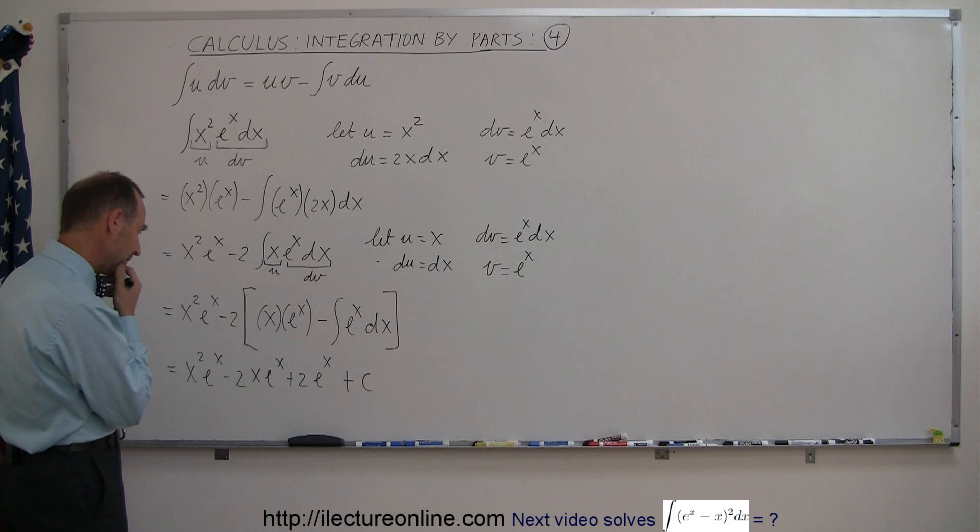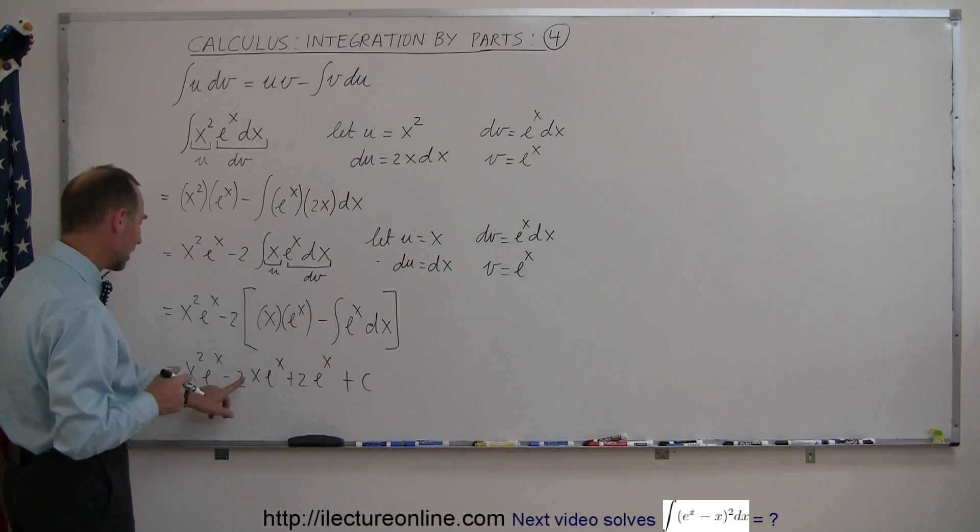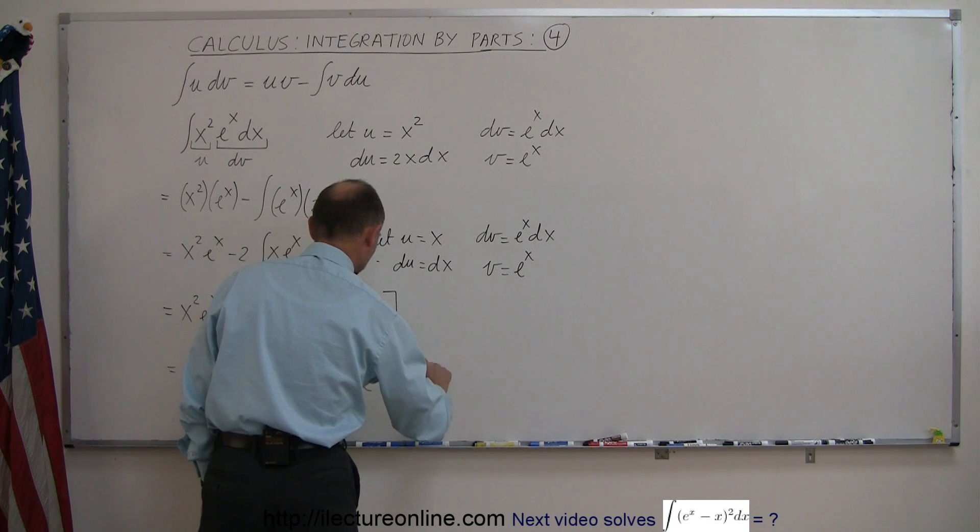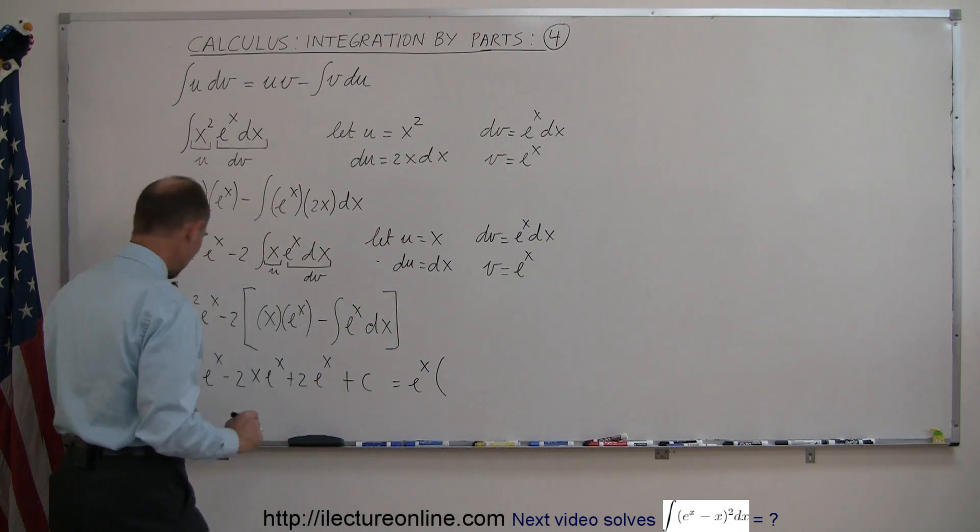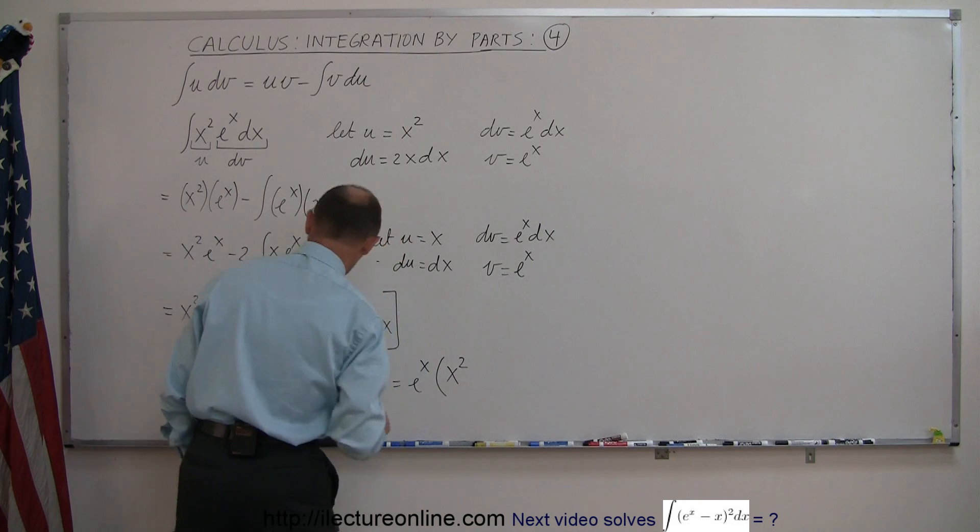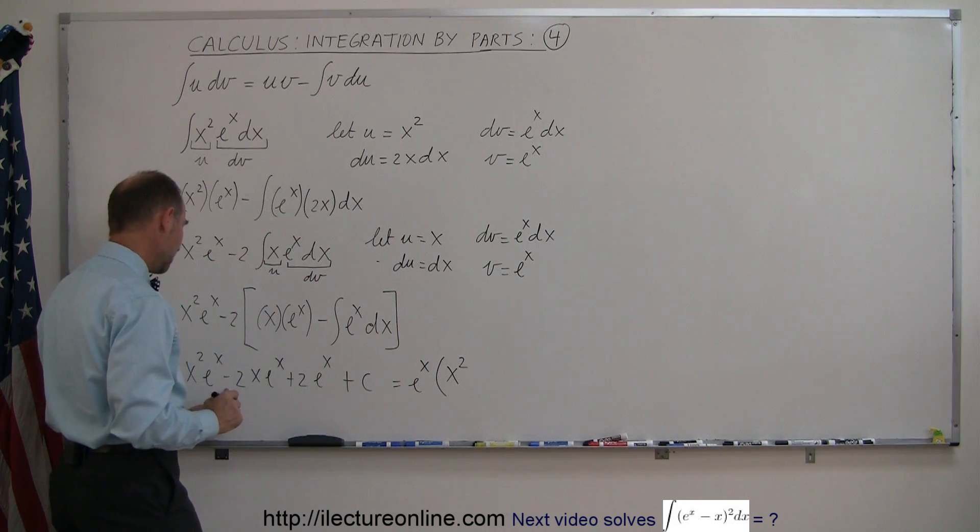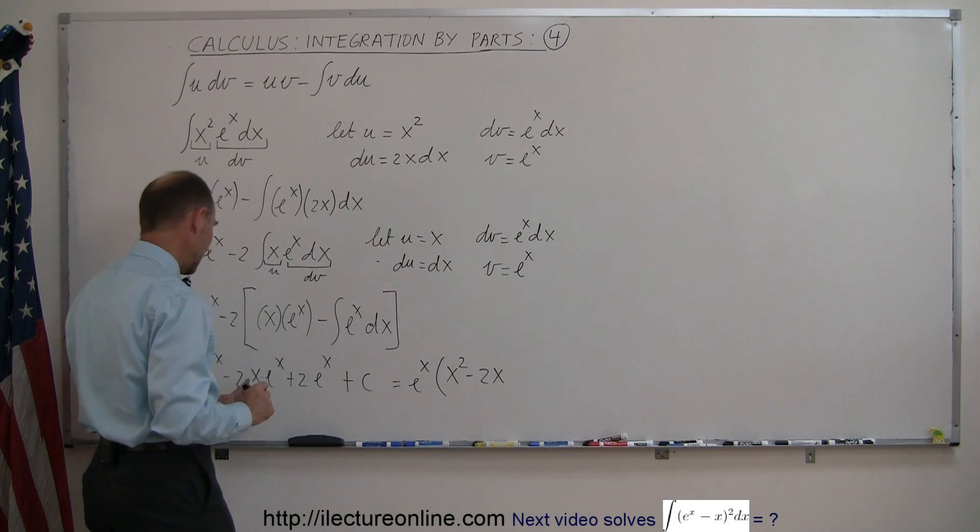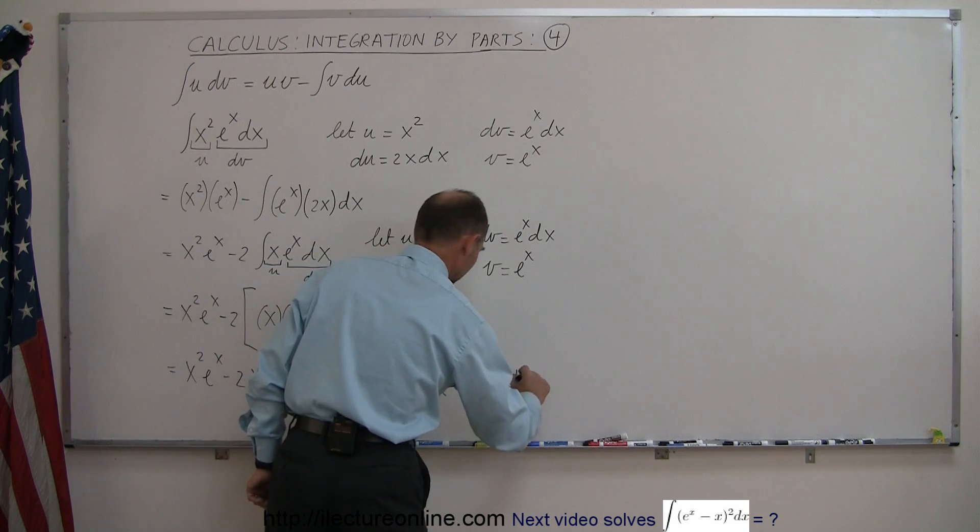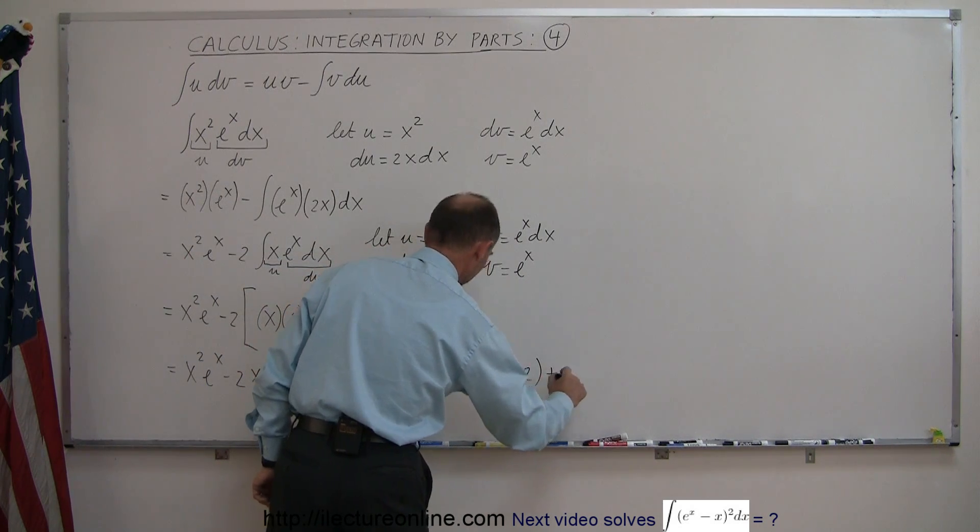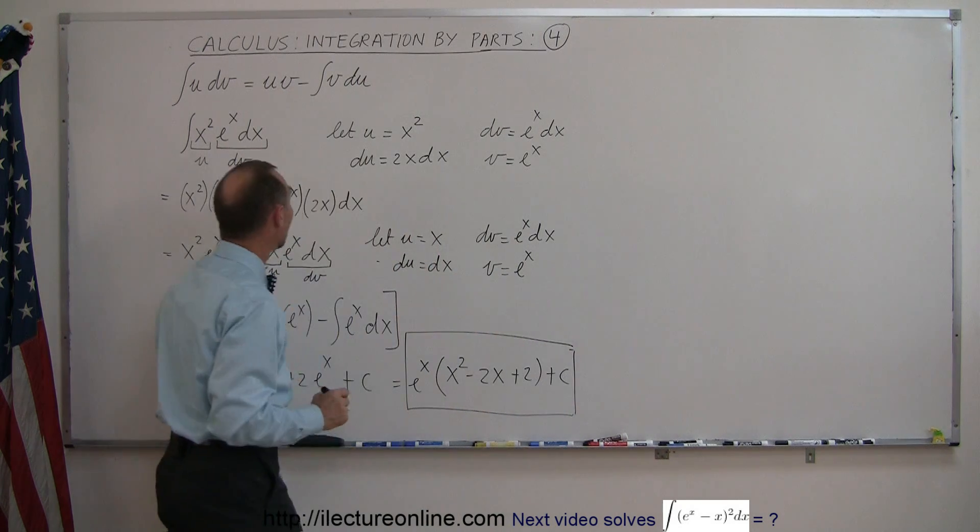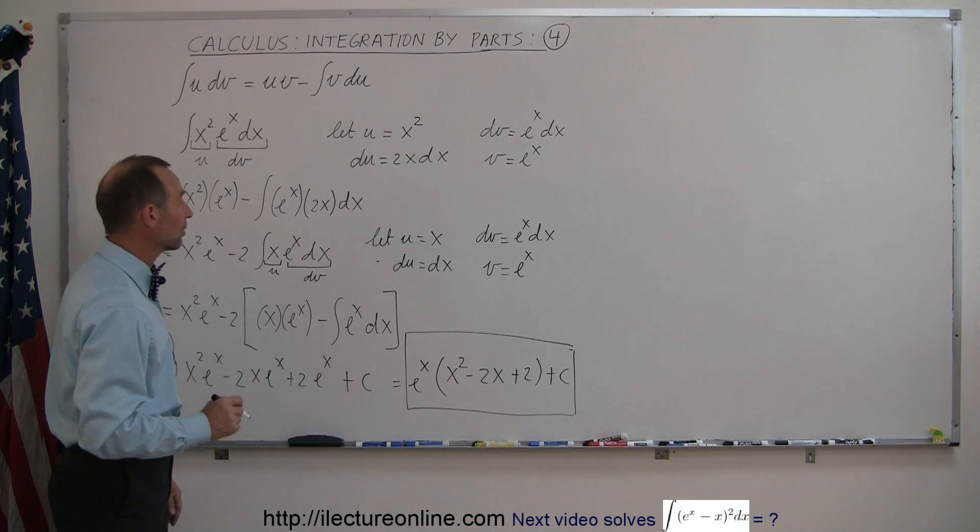Now, can we simplify this? I think we can. We have an e to the x in each term here. So we can factor that out. So this can be written as e to the x times: we're left with an x squared, we're left with a minus 2x over here, and then we're left with a positive 2 over here. And then the constant of integration. And this is the integral of our original x squared e to the x dx.